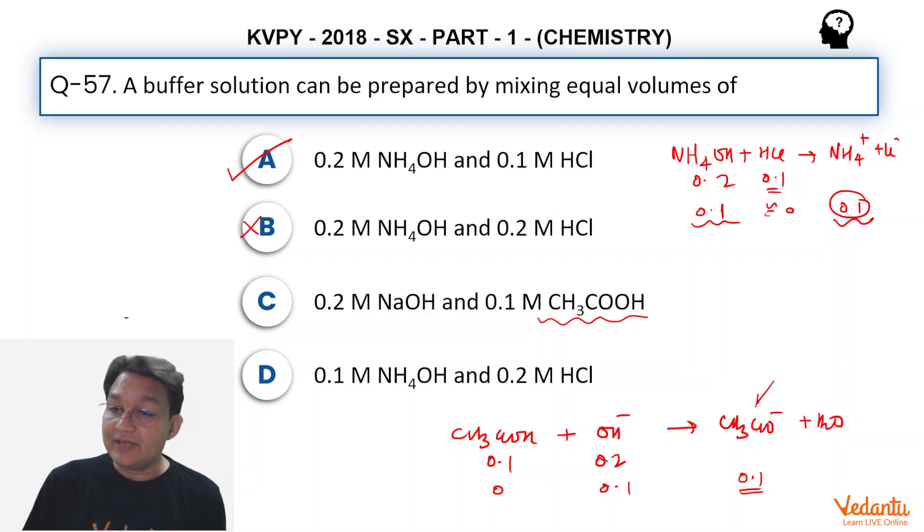Here weak base is there or conjugate base is there, but conjugate acid is absent. In a buffer solution, we know conjugate acid-base pairs of weak acid or weak base should be present. That is not a buffer solution also.